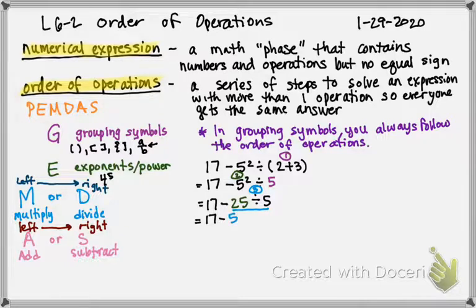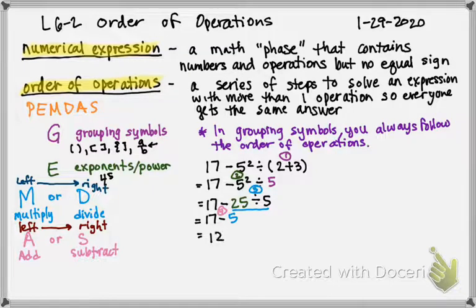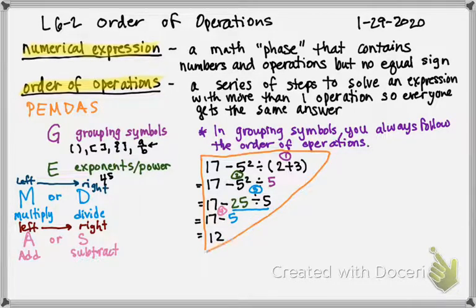Now I'm left with adding or subtracting. All I have left is subtracting, so I just do the math — that's my last step. I end up with 17 take away 5 is 12. If you look at the overall shape of your work, there's that upside-down triangle.